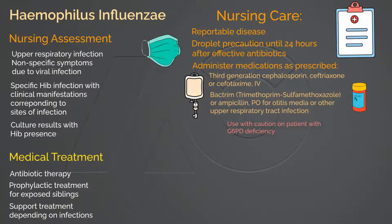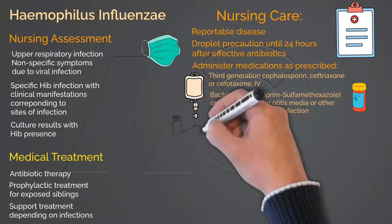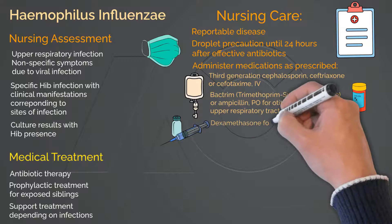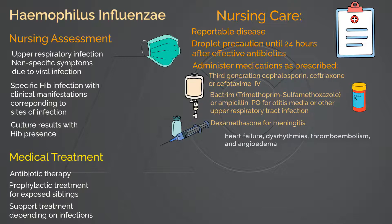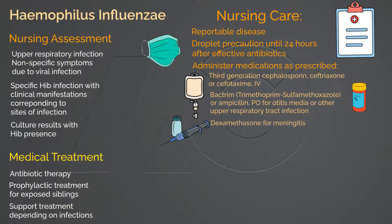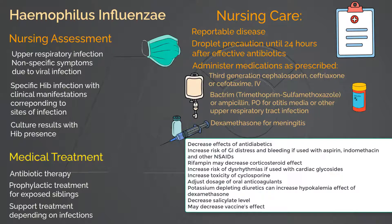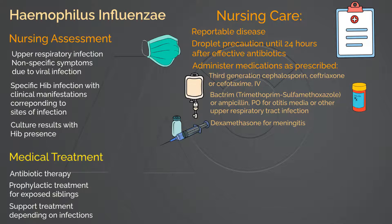Dexamethasone is given if the patient has meningitis. This corticosteroid medication reduces cerebral edema, preventing neurological complications. Being a hormonal medication, the effects of dexamethasone are generalized to entire systemic functions. Concerning adverse effects include fluid retention and electrolyte imbalances, circulatory effects, musculoskeletal effects, integumentary effects, endocrinal effects, GI effects, and more. This medication can also interact with many other drugs. When using corticosteroid medication, tapering the dose before discontinuing is important to prevent rebound inflammation and hypoglycemia. If the patient has had prolonged use of dexamethasone, abrupt withdrawal of the medication could be lethal.